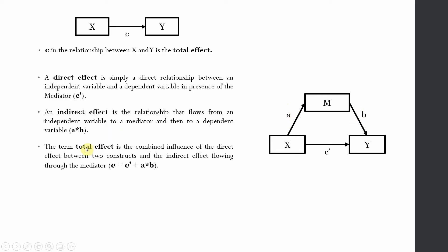The total effect is actually the sum of the direct effect and the indirect effect. The indirect effect is calculated through multiplication of A and B. A multiplied by B plus C complement will give you the total effect — the total effect passing from X to Y, either directly or indirectly through M.